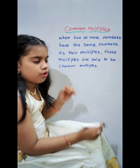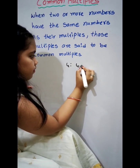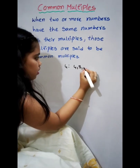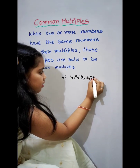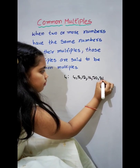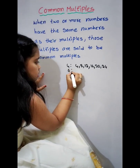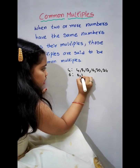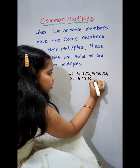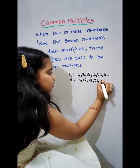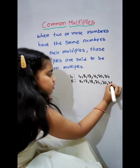Multiples of 4: 4, 8, 12, 16, 20, 24. Multiples of 6: 6, 12, 18, 24, 30, 36, and so on.